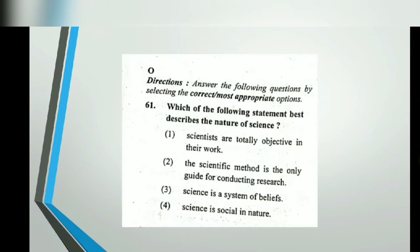I have also shared this topic in my video. The first option says scientists are totally objective in their work — this is wrong, because scientists are human beings and they can be both subjective and objective. The second option says scientific method is the only method which can be used to conduct research — this is also wrong, as it is not the only universal method. The third option says science is a system of beliefs — that is wrong too, science is a system of observation and evidence, not beliefs. The fourth option, science is social in nature, is correct because science is associated with society.